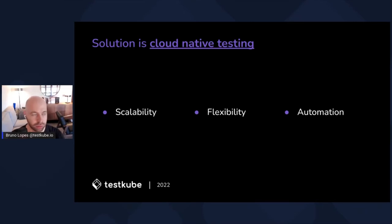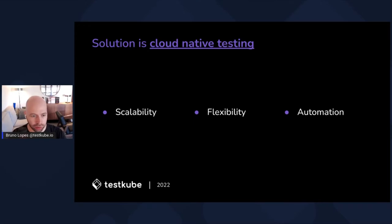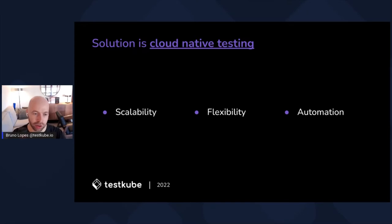So what could be a solution to these challenges? The new approach we're calling is Cloud Native Testing, and it sits on three principles: scalability, flexibility, and automation. When you think of scalability — if you run your tests in the cloud, you expect them to scale as your testing needs increase. Kubernetes is really made to scale things, so there's an advantage if you choose to use Kubernetes.